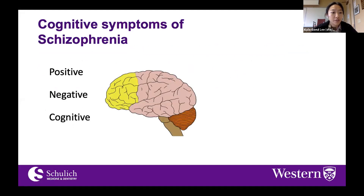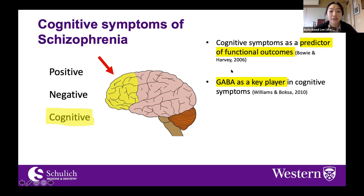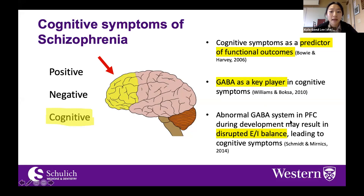My model is trying to focus specifically on cognitive symptoms of schizophrenia. Cognitive symptoms are a predictor of functional outcomes. Schizophrenia has been viewed as one of the most functionally impaired psychiatric disorders, with three clusters of symptoms: positive, negative, and cognitive. Cognitive symptoms have been gaining traction because they're great predictors of functional impairment in everyday life and have a significant interaction within the prefrontal cortex. The GABA system has been identified as a key player, as it may result in disrupted excitatory-inhibitory balance underlying these cognitive symptoms.